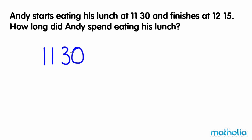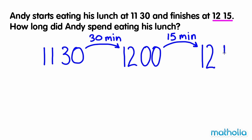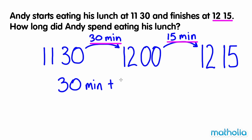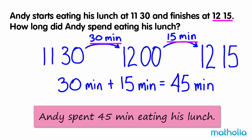Starting at 11:30 hours, we add 30 minutes to get to 12:00 hours. We know he finishes his lunch at 12:15 hours, so we need to add another 15 minutes. Add the times together to find the total time: 30 minutes plus 15 minutes equals 45 minutes. So Andy spent 45 minutes eating his lunch.